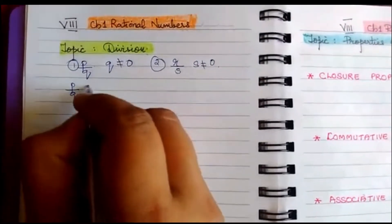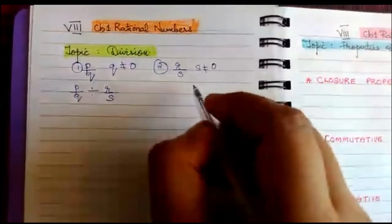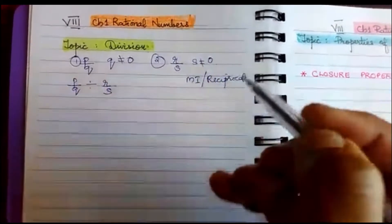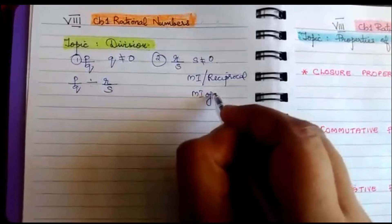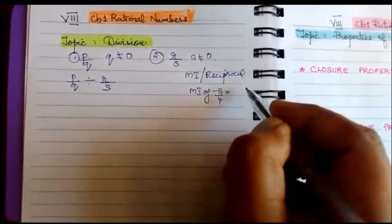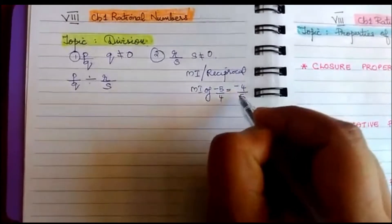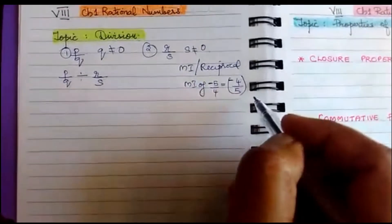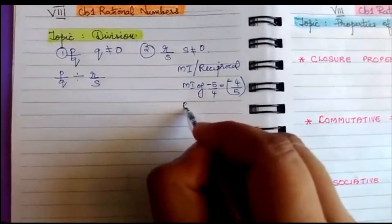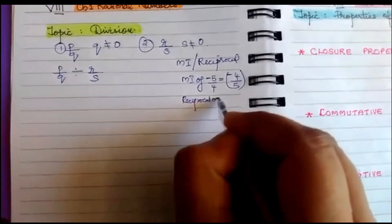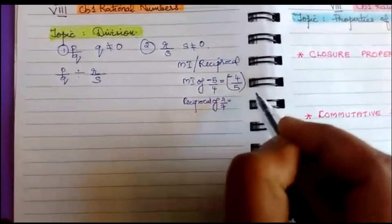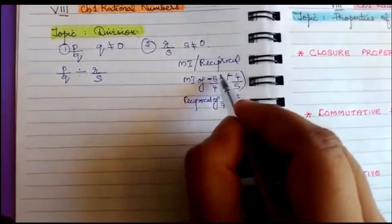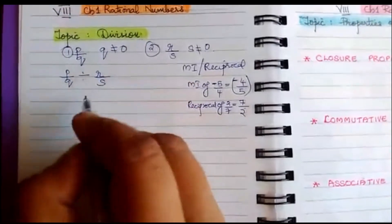So division means p/q divided by r/s. You have learned multiplicative inverse or reciprocal of a rational number. The multiplicative inverse of -5/4 is -4/5 — the sign remains the same but numerator and denominator interchange. This is also called the reciprocal. For example, the reciprocal of 2/7 is 7/2. A positive number's reciprocal is positive, and a negative number's reciprocal is negative.